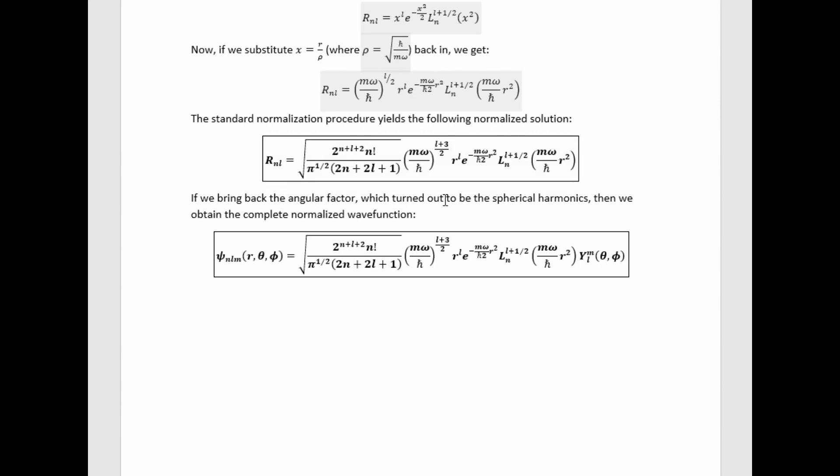So then if we bring back the angular factor, which we found was just the spherical harmonics, then we get this full, gorgeous, beautiful, romantic thing. Oh my gosh, I can't help but call it sexy. This full, complete, normalized, exact solution to the Schrodinger equation for the spherically symmetric quantum harmonic oscillator. It's stunning, it's beautiful, it's amazing. If you don't love it, you're insane. I love exact solutions to partial differential equations like this. They get me all hyped up. They're very cool.